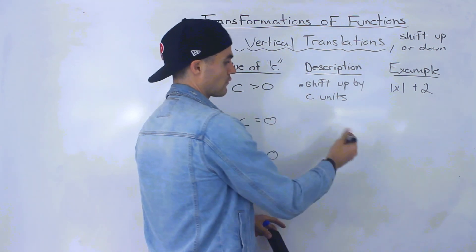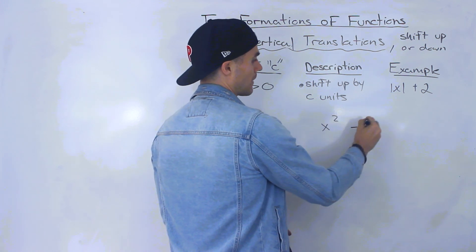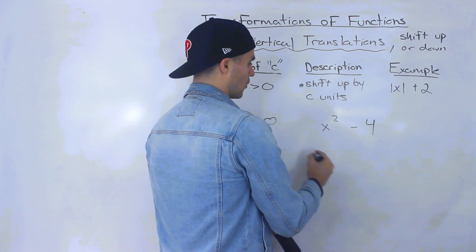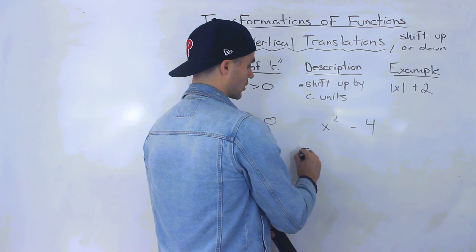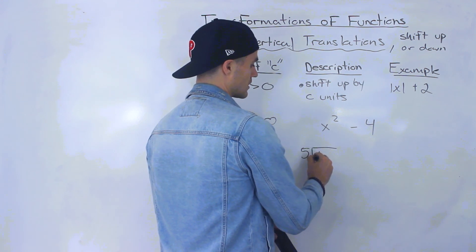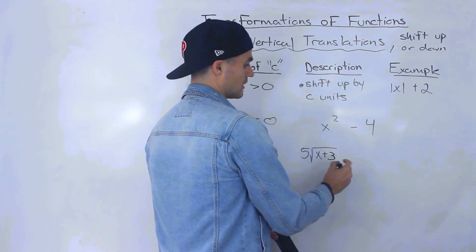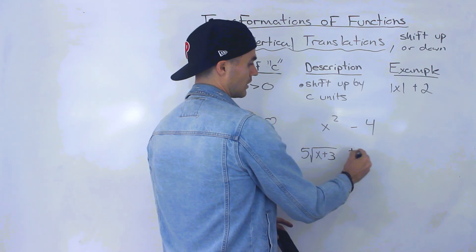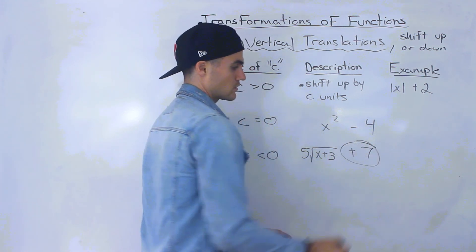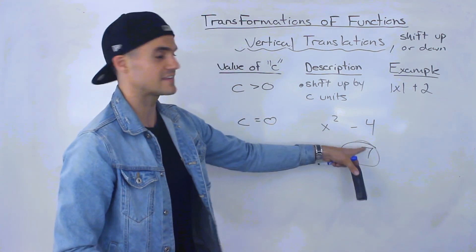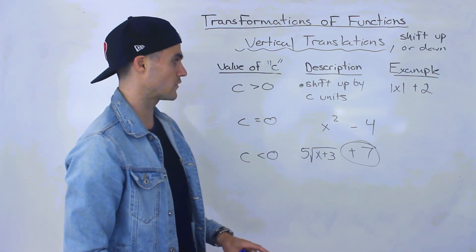Notice that that C value is positive two. The C value is always going to be at the end of a function. So like X squared minus four, or we might have something more complex like five root X plus three and then we'll have like plus seven. So that C value would be positive seven. It's going to be at the end of that transform function.